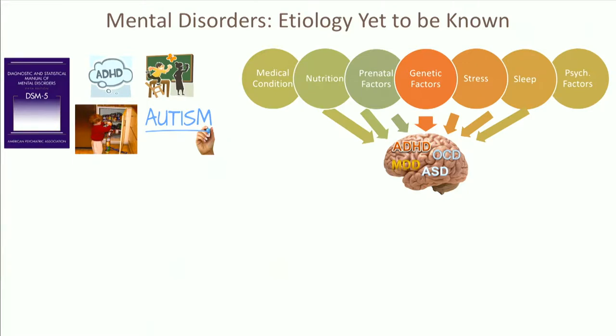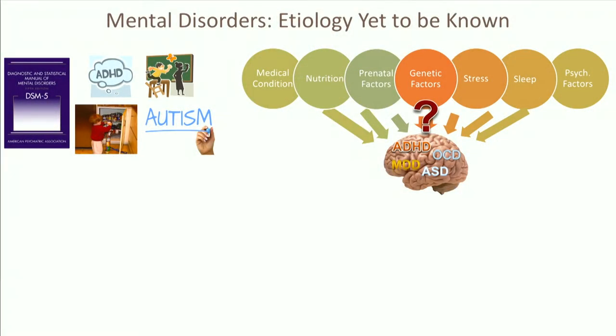We know that a lot of risk factors are contributing to those disorders — genetic factors, sleep disorders, stress, prenatal factors, and so on. But we don't really know much about the etiology of these disorders. These are disorders defined at the behavioral level, and we don't really know much about the link between the risk factors and the disorders themselves.